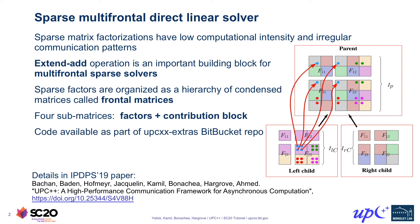The update that happens is an addition of what has been multiplied in the right child and also the left child into the parent matrix. The parent matrix has a superset of all indices in the two children, so elements of the left child matrix that have been multiplied will be spread out throughout the parent matrix in different locations, because there may be other non-zeros in the parent that don't exist in the left child. Those blue dots are being spread out and added into the parent matrix.